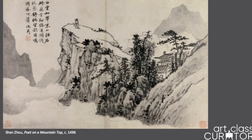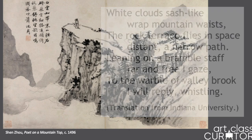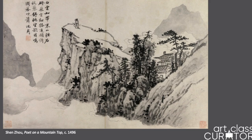I also want you to look at this writing on the artwork. We have some Chinese characters at the top left, and that is actually a poem. It says: "White clouds, sash-like, wrap mountain wastes. The rock terrace flies in space, distant and narrow path. Leaning on a bramble staff, far and free I gaze; to the warble of valley brook, I will reply, whistling." That fits with our title, Poet on a Mountaintop — there's our poet, and that might be the poem he's writing about nature sitting at the top of this mountain.